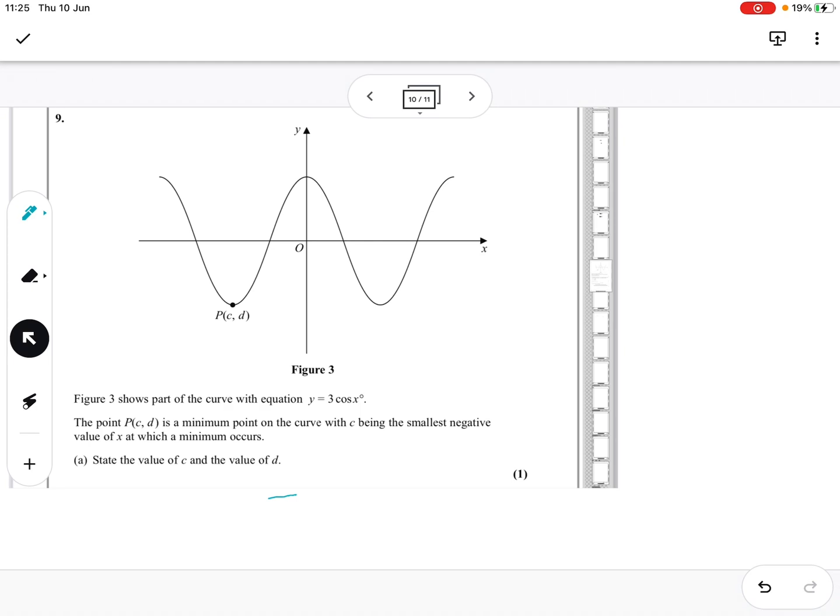Figure 3 shows part of the curve with equation y = 3cos x. The points c and d is a minimum point on the curve, c being the smallest negative value of x where the minimum occurs. State the value of c, d.